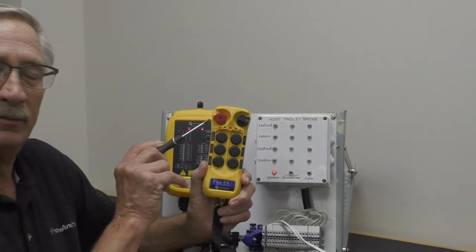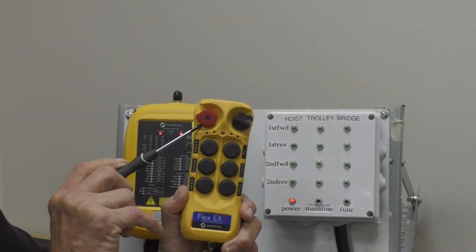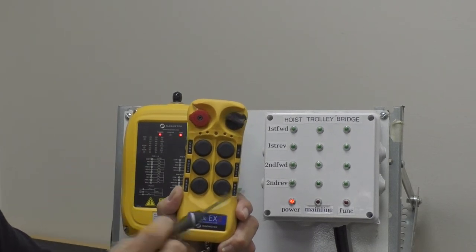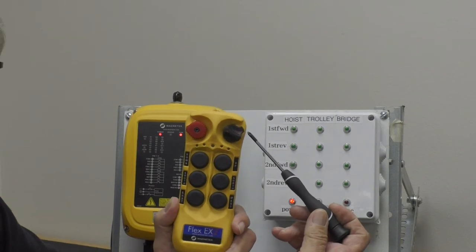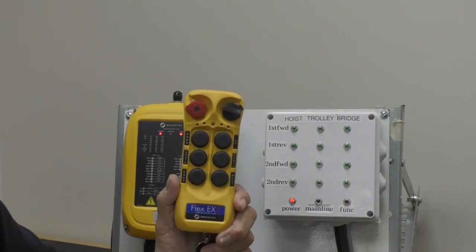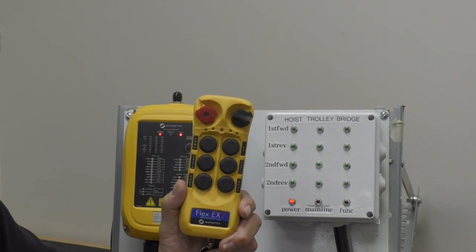The first item will be your e-stop which is a red twist lock switch. On this side right here is your on off switch. Now the configuration for the buttons for our Magnatec goes from right to left.